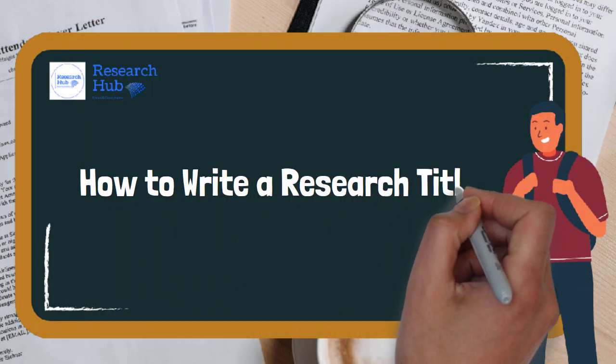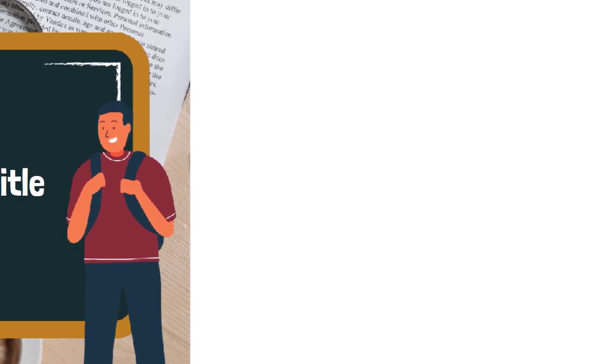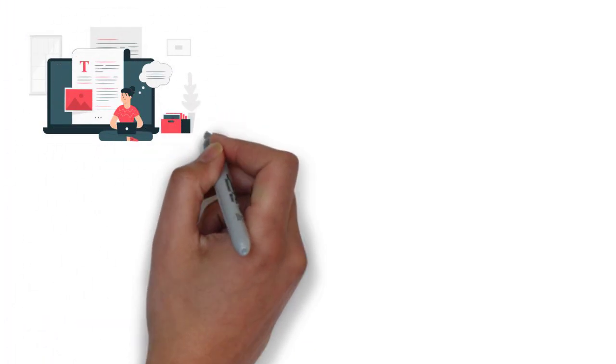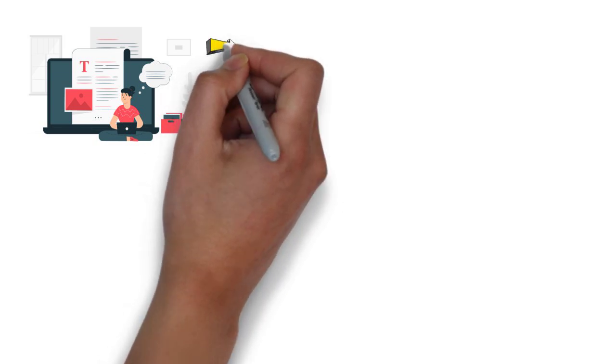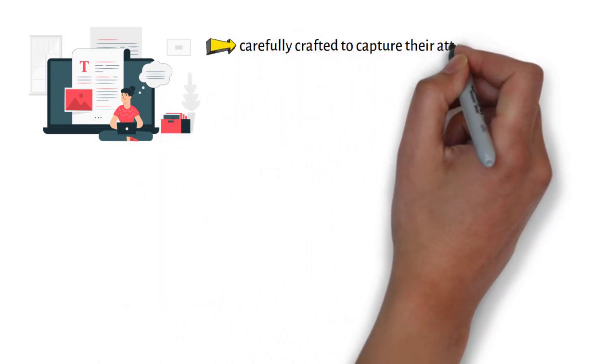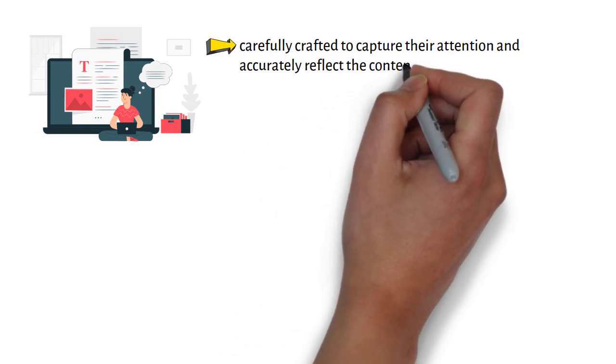How to write a research title. The title of a research paper is the first thing that readers see, and it should be carefully crafted to capture their attention and accurately reflect the content of the paper.